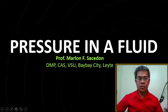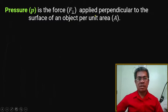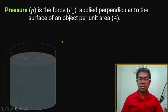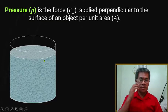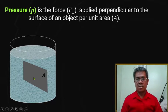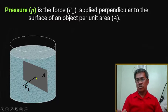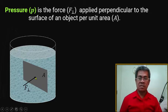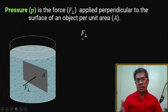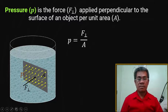In this video we'll discuss the pressure in a fluid. By definition, pressure is the force applied perpendicular to the surface of an object per unit area. Suppose we have fluid inside a container. This fluid always exerts a force on any plane surface, and that force is perpendicular to that area. If we divide this perpendicular force by the area, the result is pressure, and this pressure is applied to any portion of the area.